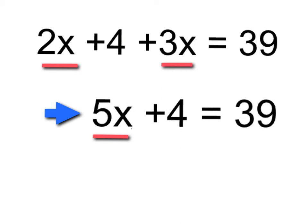First, you take the two terms that are like terms, and using our rules of integers, you want to combine them together. This is a positive 2x, and this is a positive 3x. A positive 2x and positive 3x combine together to make positive 5x.